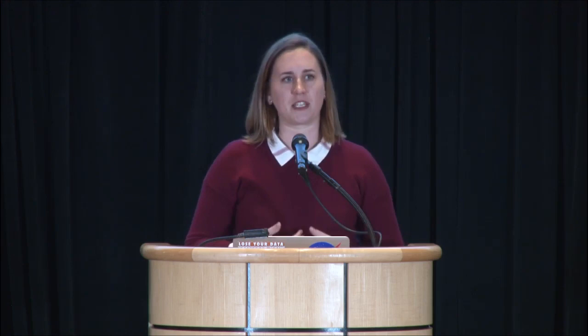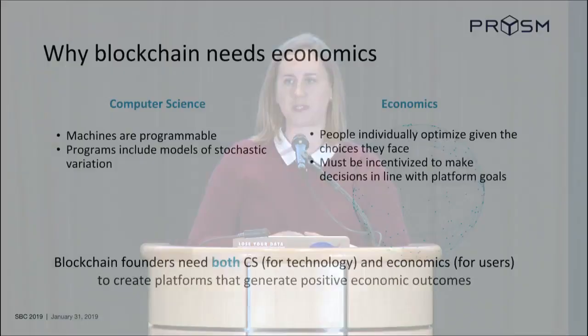This is taking an economic lens to the eternal question of how to design blockchain governance. This paper is joined with Cathy Barrera. Cathy and I are both founding economists at Prism Group, where we work with blockchain projects to help them with their economics and governance design. I have a PhD in economics from Harvard, where I was actually office mates with Jacob, who just spoke.